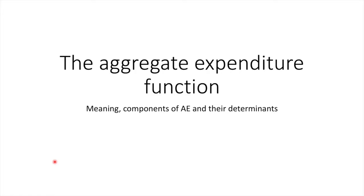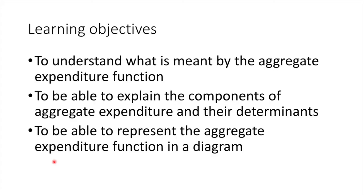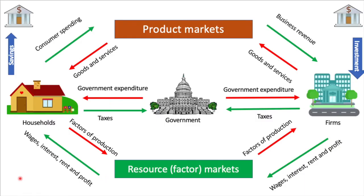In this video we'll take our first look at the aggregate expenditure function, examine its components and their determinants. We'll conclude with an introduction to the diagram which will be explored in further detail in the following video. The aggregate expenditure approach to equilibrium is based on the theory that an economy will be in equilibrium if expenditure equals income. We reference the circular flow model to better understand what's meant by that. If expenditure equals income, it means that planned spending is equal to the income earned by the factors of production, and the economy is in equilibrium.